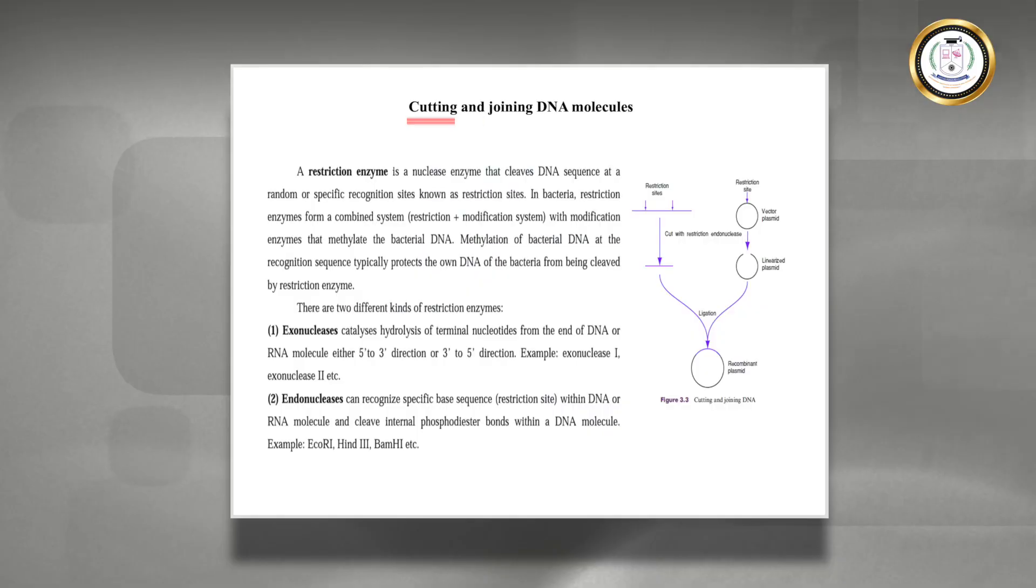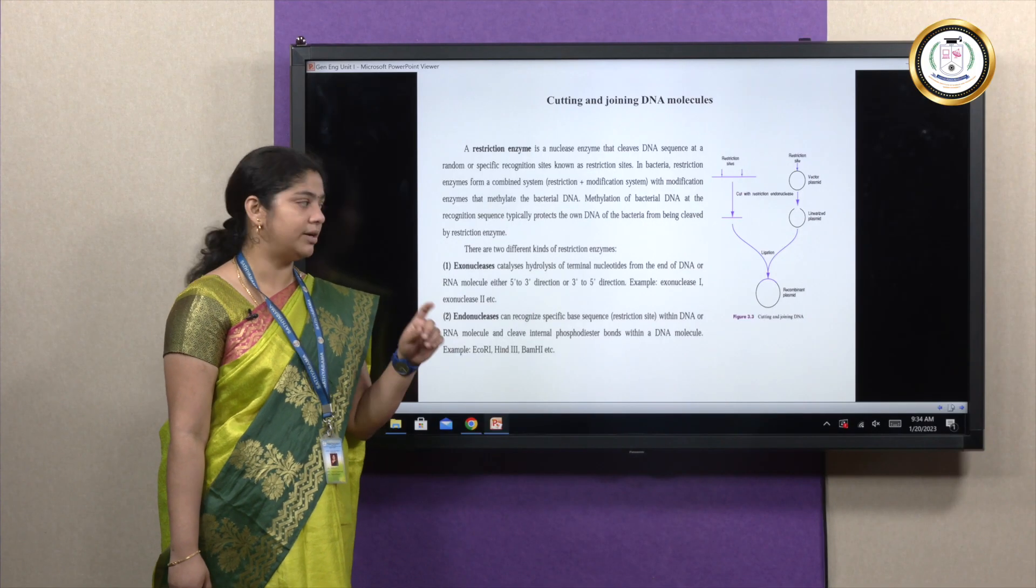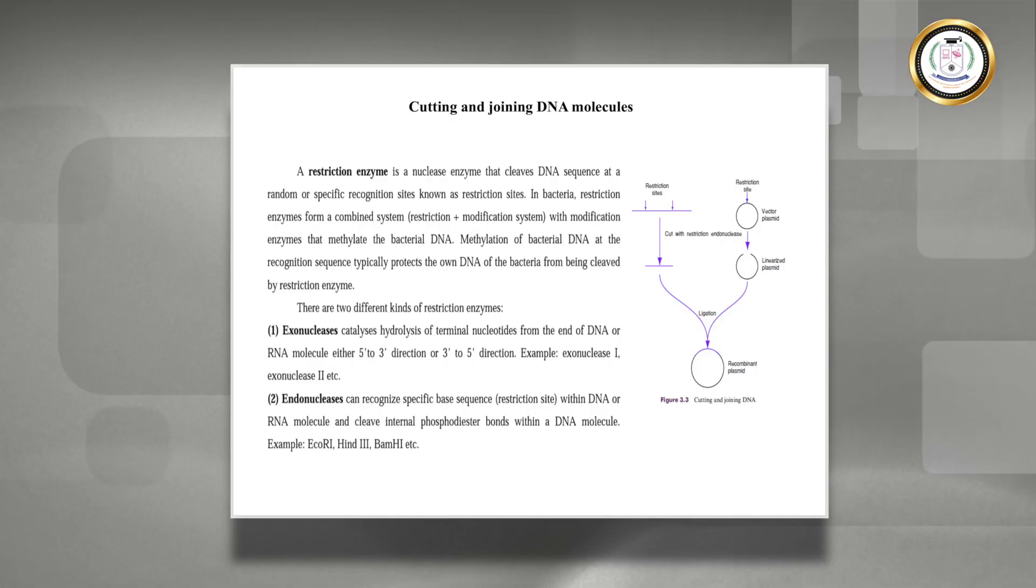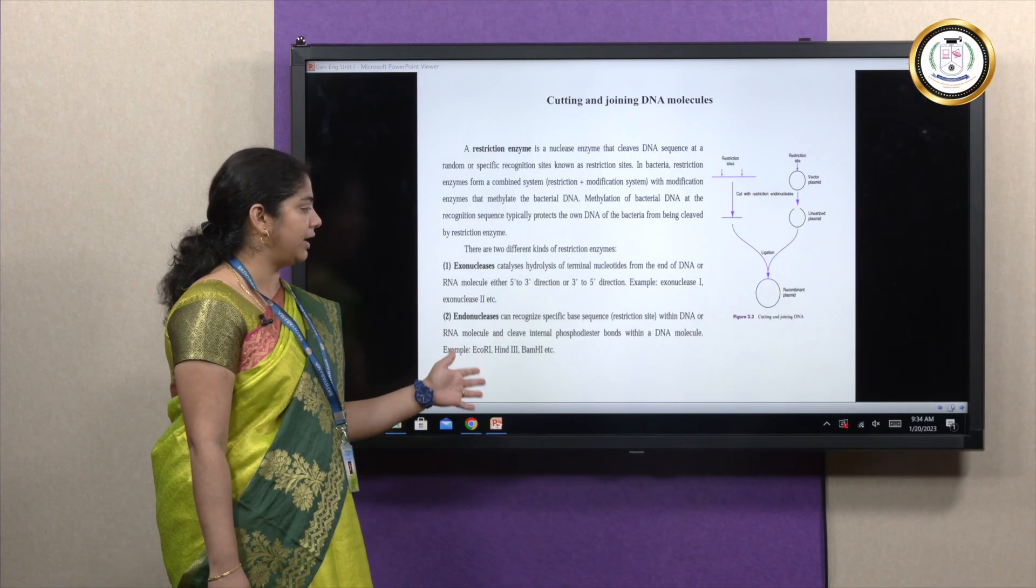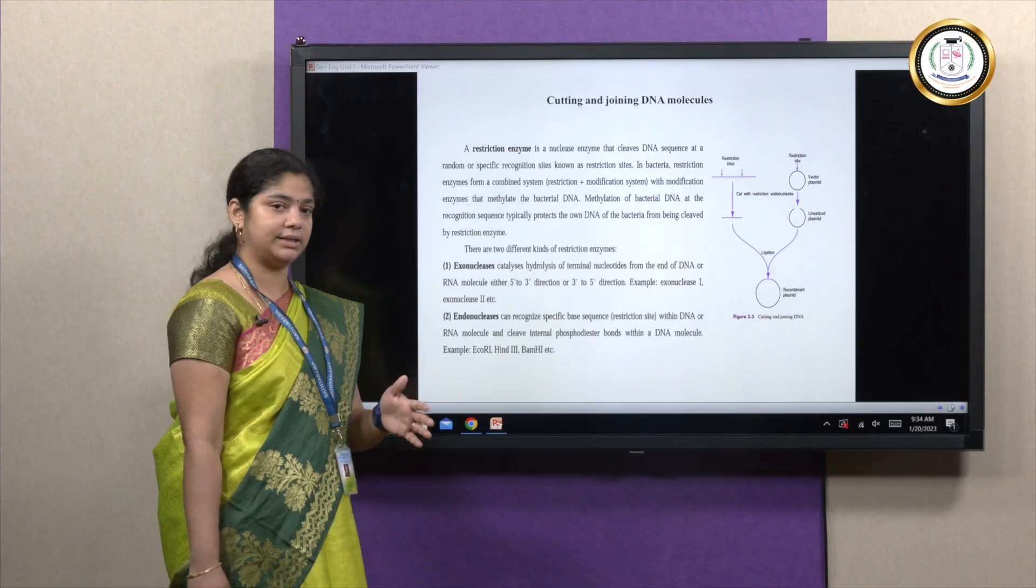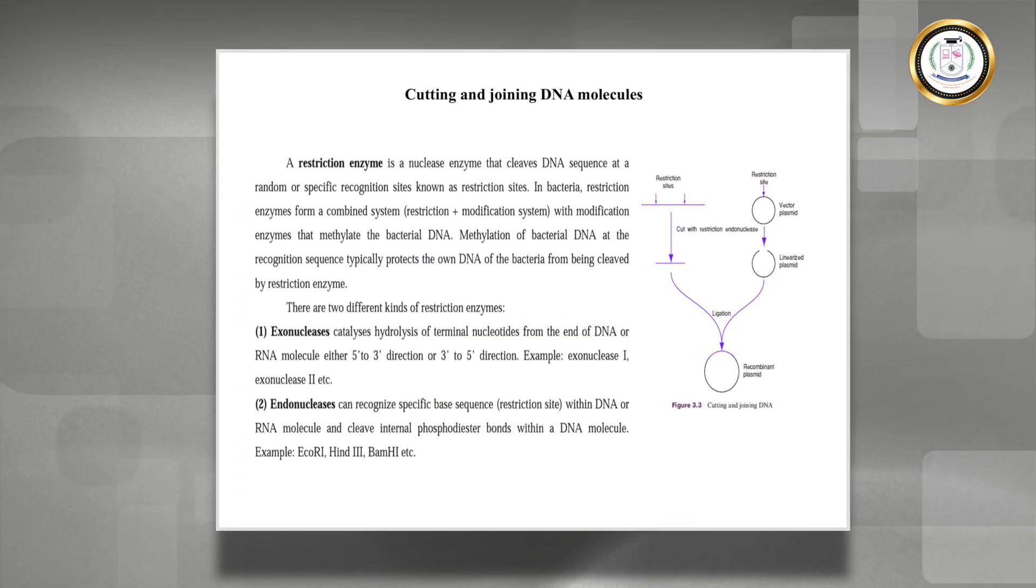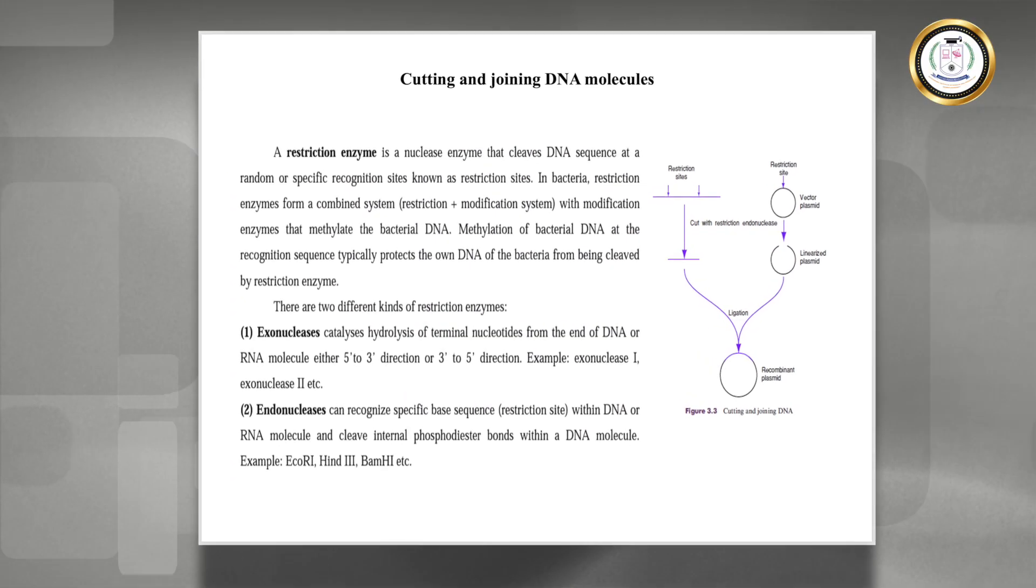Here we can see cutting and joining. To do cutting and joining there is this enzyme called restriction enzyme. Restriction enzyme is classified into two types: exonuclease and endonuclease. Exonuclease cuts at the ends, while endonuclease cuts in between the sequences where we cut specifically at a target at a particular gene sequence.